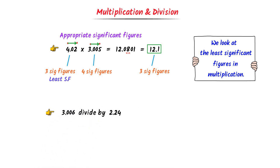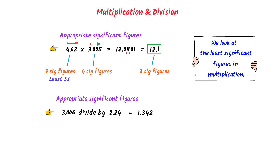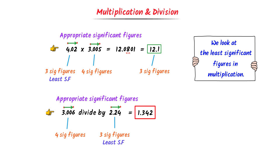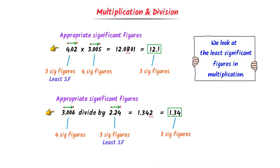Secondly, consider the division of these two numbers. After division I get 1.342 on the calculator. How can we round this answer to the appropriate number of significant figures? As usual, we look at the least number of significant figures. In 3.006 there are 4 significant figures, while in 2.24 there are 3 significant figures. So I round this answer to 3 significant figures. Since 2 is less than 5, I do not add any number to 4, and I write 1.34. Thus, the appropriate answer is 1.34. Therefore, using these two rules, we can find significant figures in decimal numbers and non-decimal numbers.